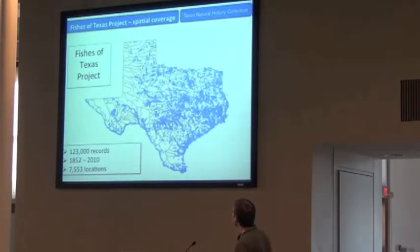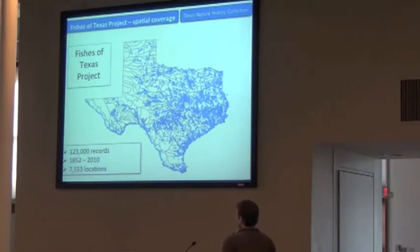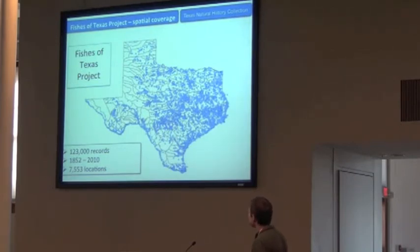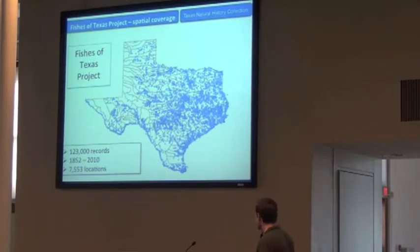Here's our data. We've got 125,000 records from 1852 to 2010, and 7,500 localities. Notice there is a lot of white space in here, scattered about. So we do need to do some more collecting, we believe, but a lot of this area is actually just places with no water, especially in West Texas.